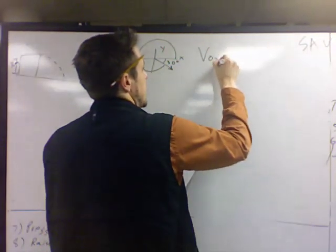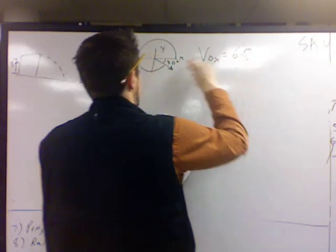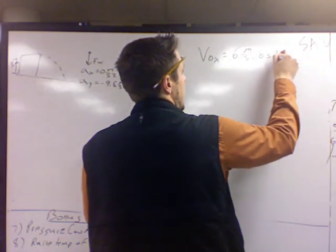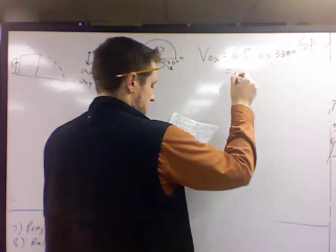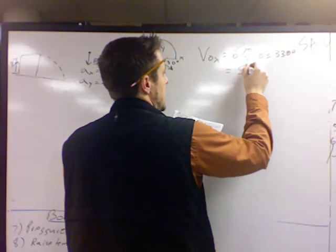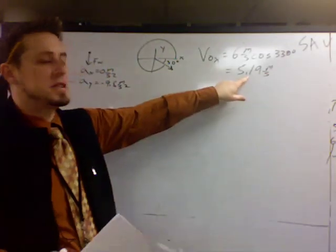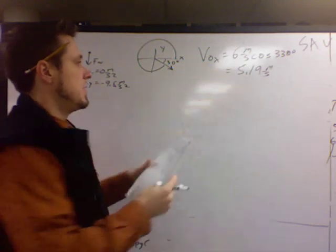So initial velocity in the x will be the 6 meters per second, which is the entire length of that arrow, times the cosine of 330, which in this case would be 5.19 meters per second. If you're doing it the automatic way, it takes care of the sign for you. If you're calling up and right positive, that makes sense because it's being thrown to the right.